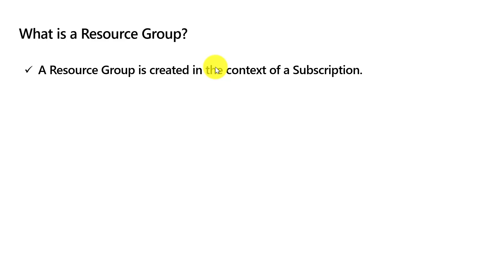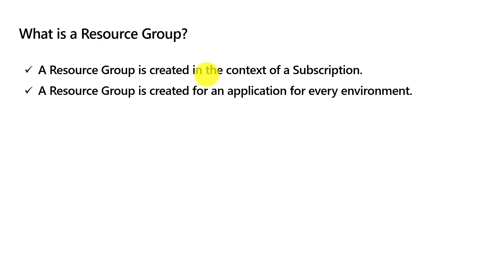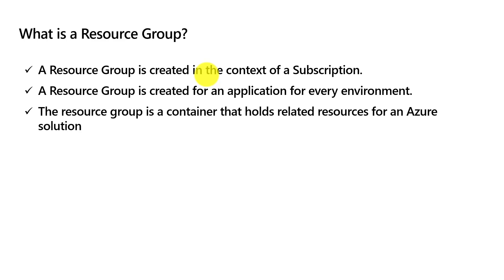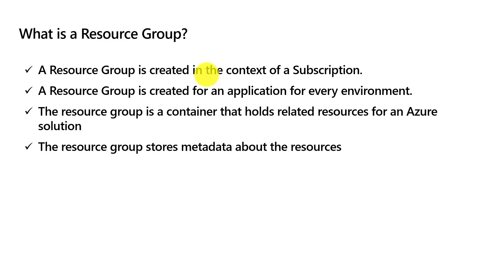One subscription can contain multiple resource groups, and usually a resource group is created for every project and every environment. For example, if you have three environments — a development environment, staging environment, and production environment — an individual resource group is created for each environment separately. Of course, this is an example; depending on how complex your project is, the rule for creating a resource group might be different. The resource group is a logical container that contains your Azure resources — probably all those resources are related for a given Azure solution.